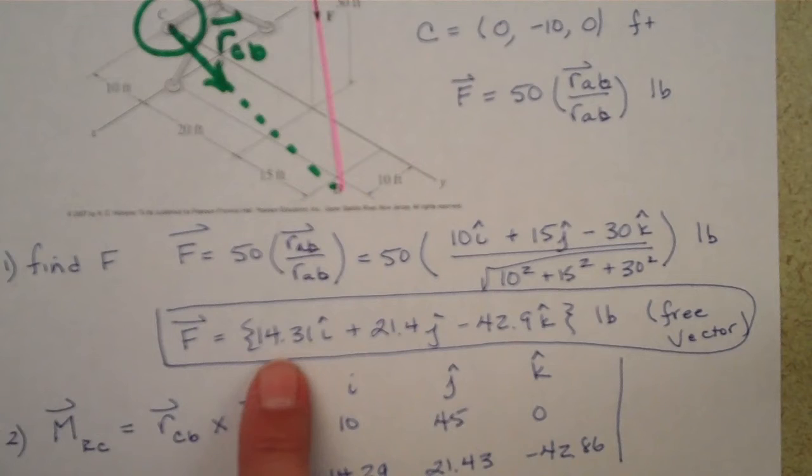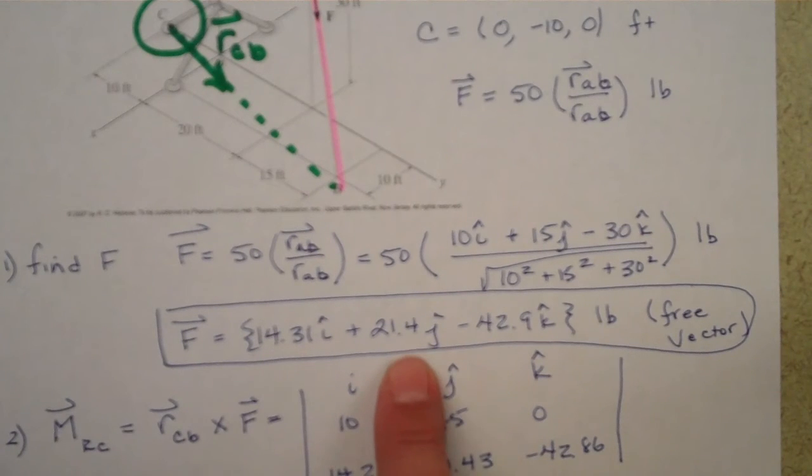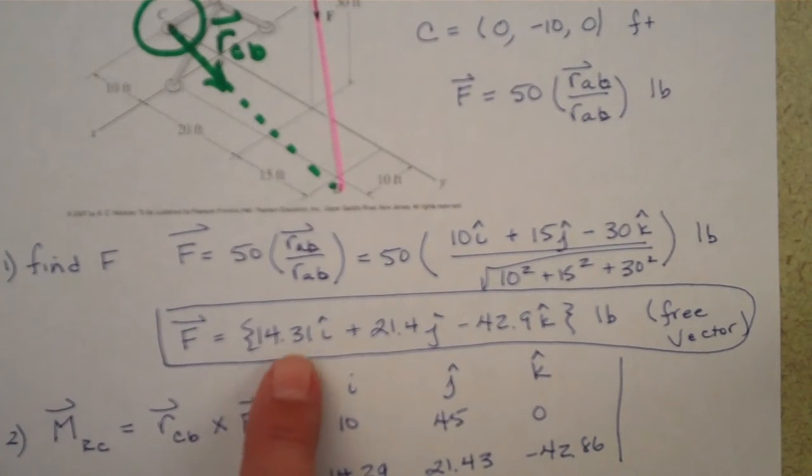In this case, we find our force vector is 14.31i, 24.4j, and 42.9k. And of course I should make that 3 sig figs, not 4 sig figs.